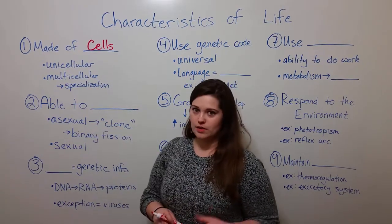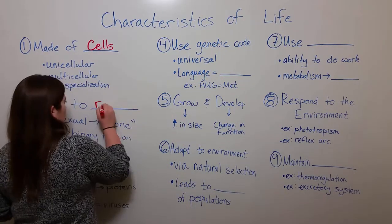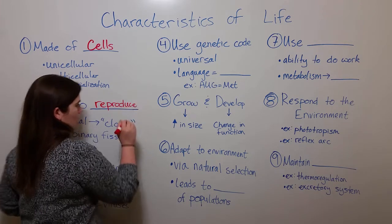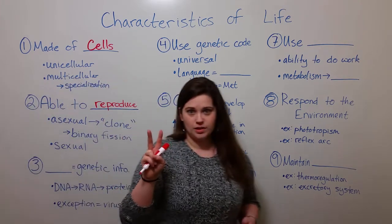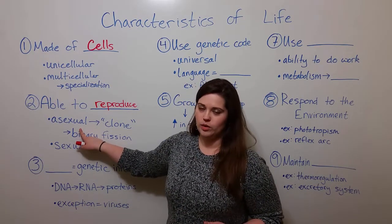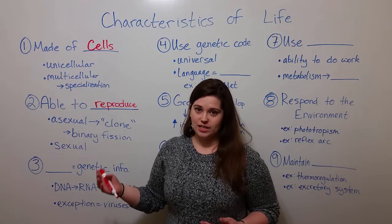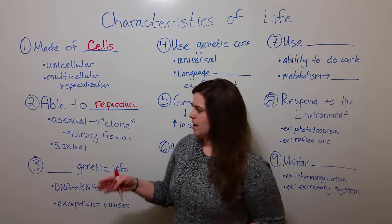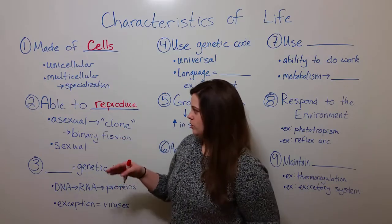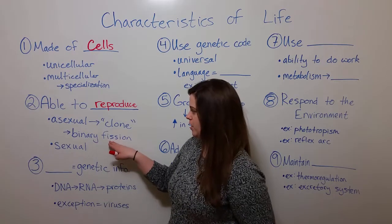Characteristic number two is that living things are able to reproduce. There are two types of reproduction. There is asexual reproduction, where the daughter organism is genetically identical to the parent organism — this is called a clone. Bacteria reproduce asexually, specifically through a process known as binary fission.